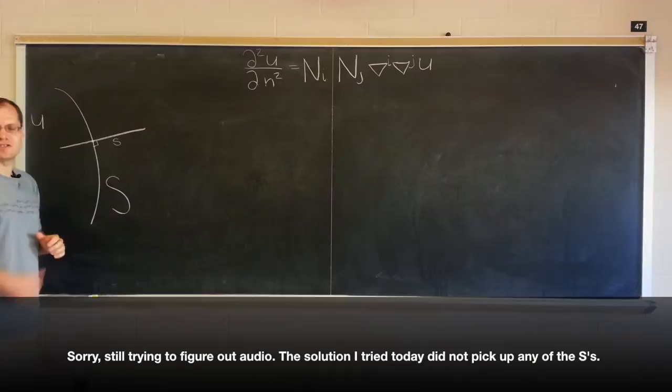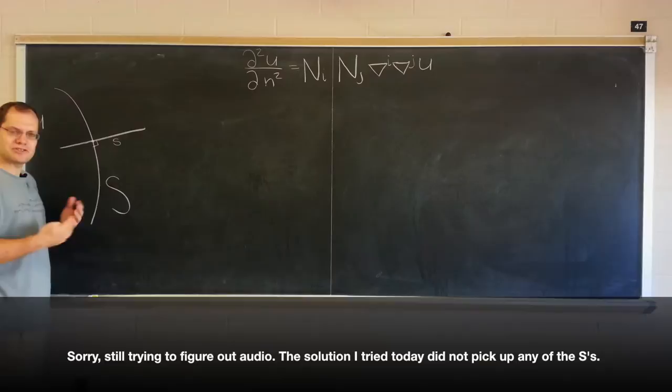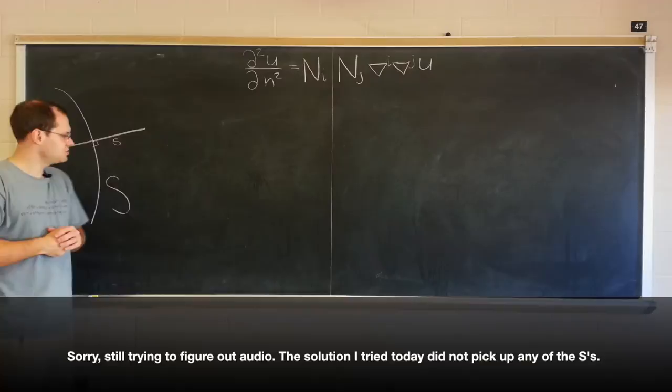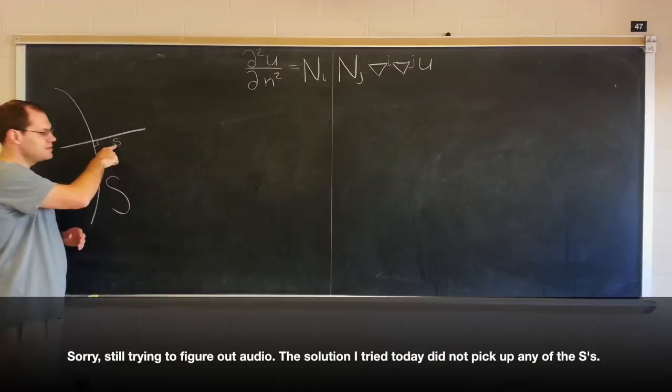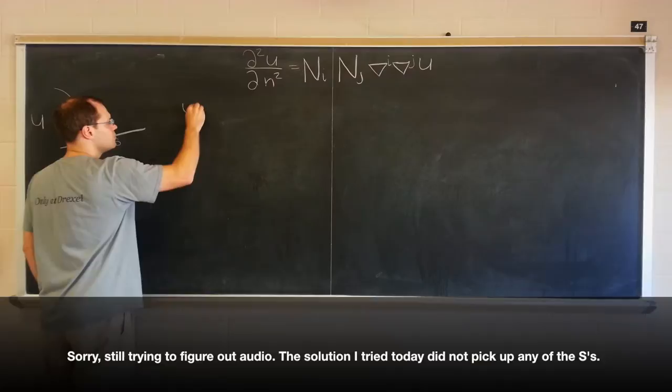This may be called the second-order normal derivative. It's the second-order rate of change. And a geometric definition would be to draw a straight line through the point at which you're interested in that rate of change, and parametrize it by arc length, parameter little s, which perhaps is 0 at this point, positive on this side, negative on this side, quite arbitrary. And then, along this straight line, u becomes a function of s, little s, the arc length.